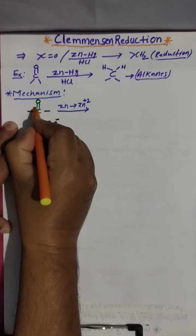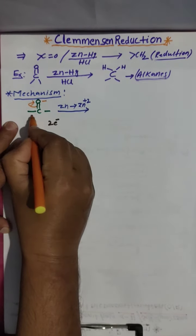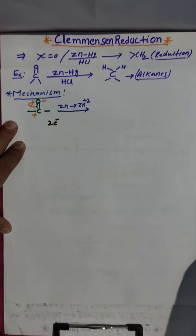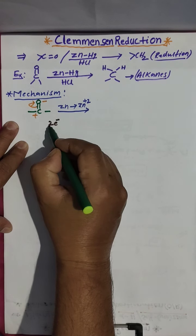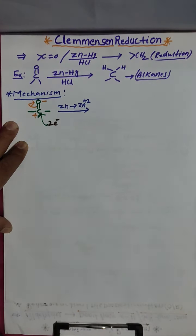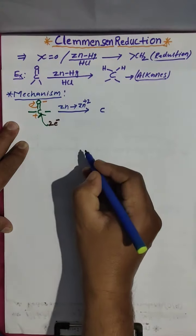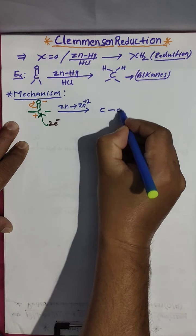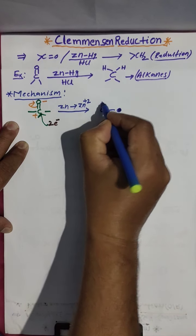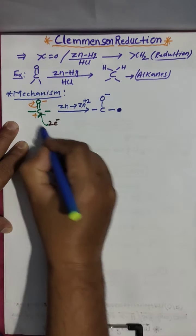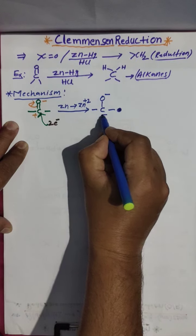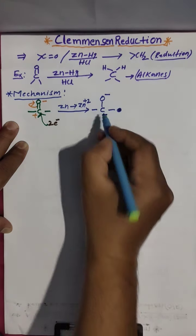You know oxygen is more electronegative — it has a δ⁻ charge and carbon has δ⁺. Immediately zinc loses two electrons, and these two electrons are donated to the carbon. So that carbon gets a negative charge, giving C–O⁻.